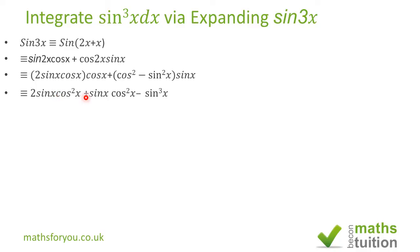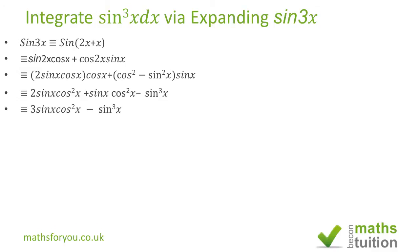Because those two terms — 2 sine x cos squared x and sine x cos squared x — are similar, if we add both we now get 3 sine x cos squared x minus sine cubed x.